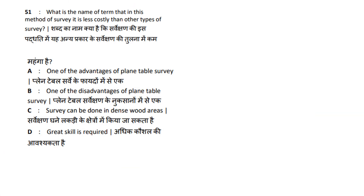What is the name of the term in which the method of survey is less costly than other methods of survey? Options: One of the advantages of plane table, One of the disadvantages of plane table, Survey can be done in dense wood areas, Great skill is required. Survey is less costly than other types of survey.